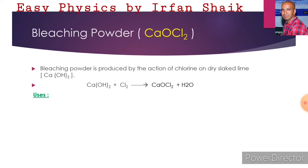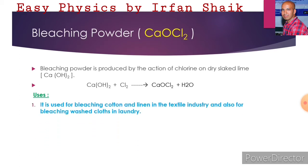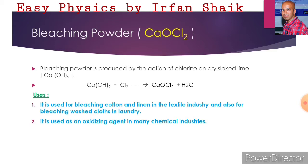Let us look at the uses of bleaching powder. It is used for bleaching cotton and linen in the textile industries, and also to wash clothes in laundry. It is also used as an oxidizing agent in many chemical industries.